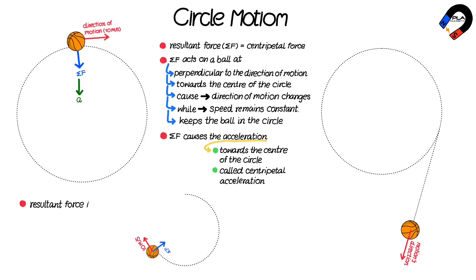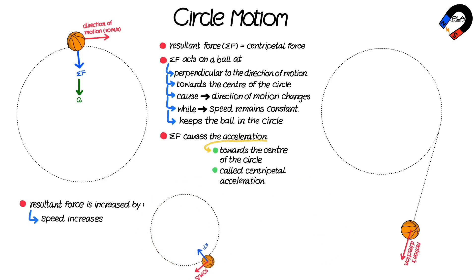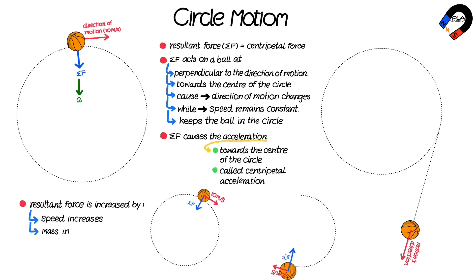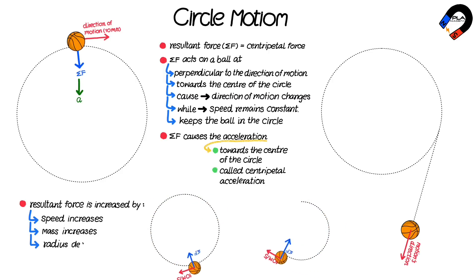The resultant force, or centripetal force, increases when: the speed of an object increases, the mass of an object increases, or the radius of the circular path decreases.